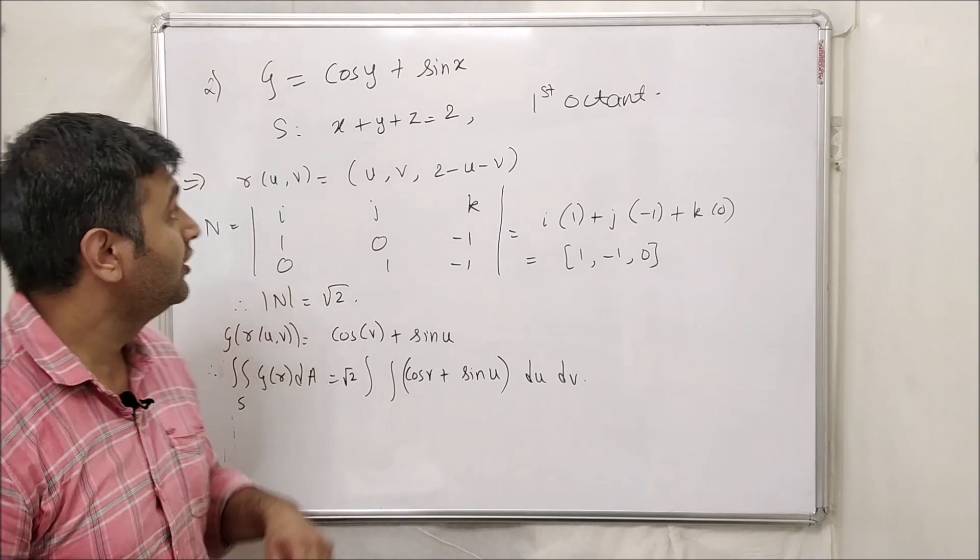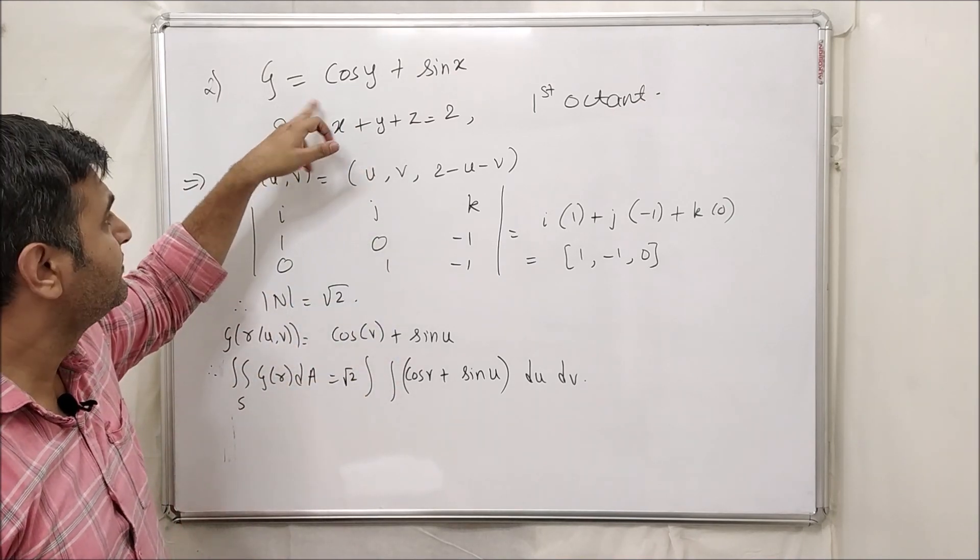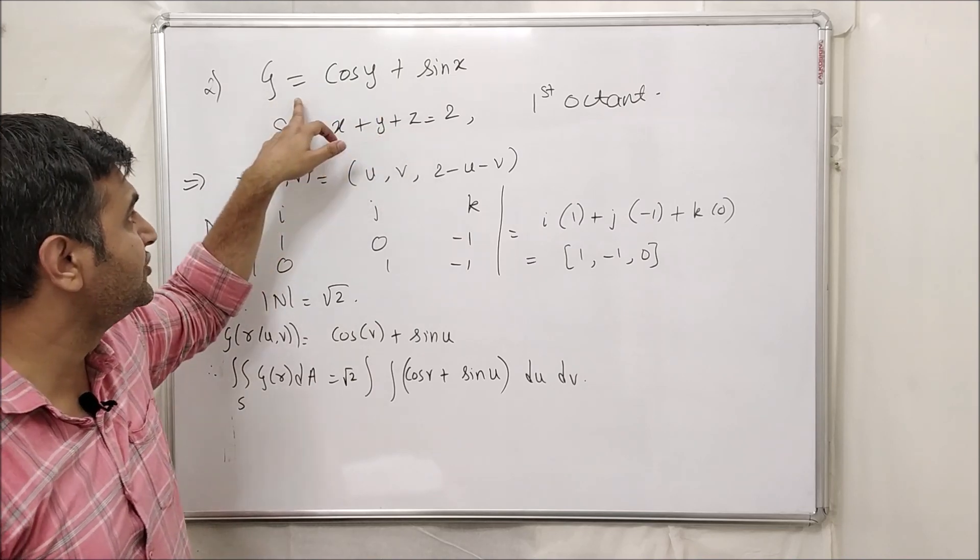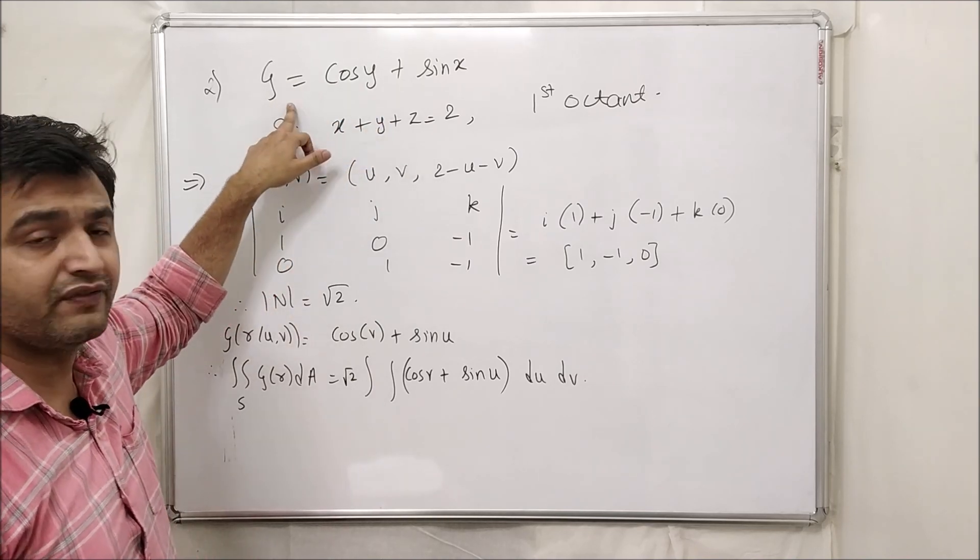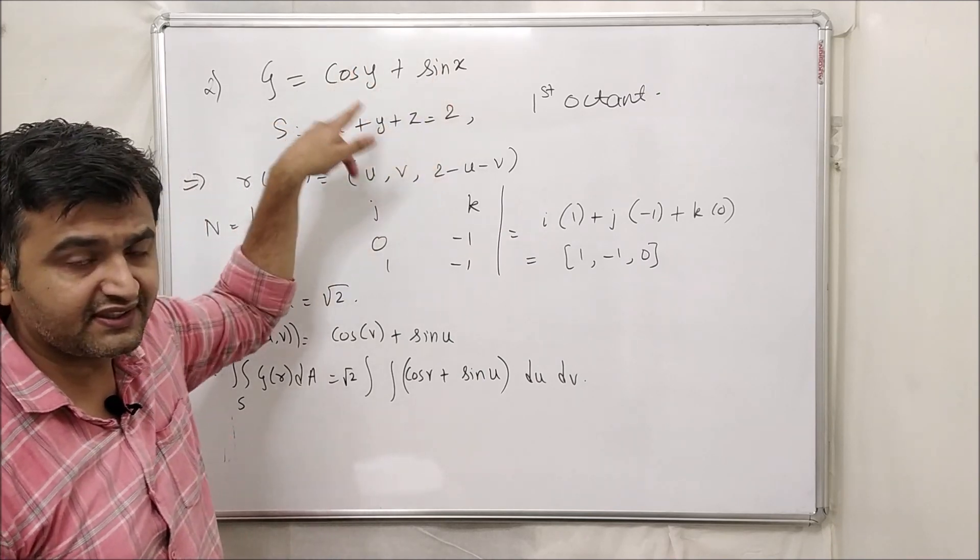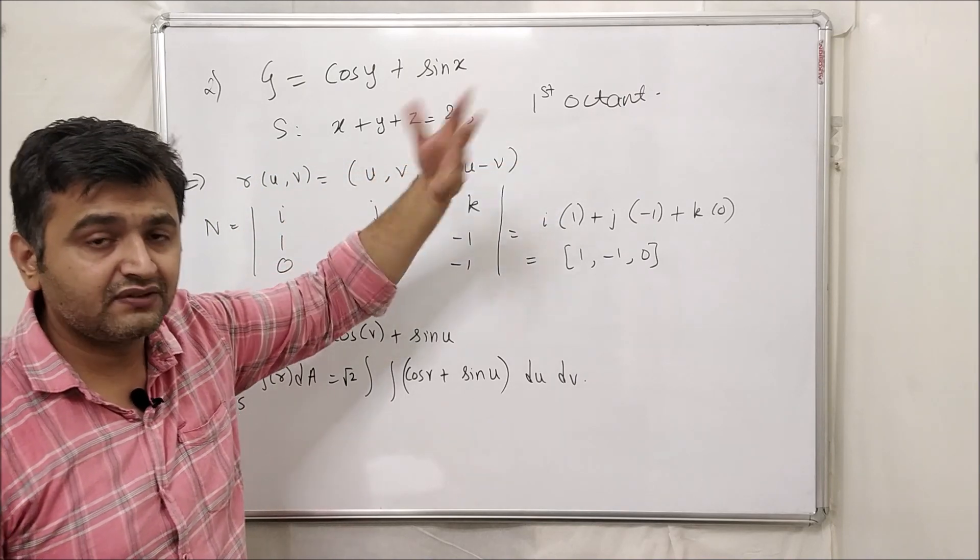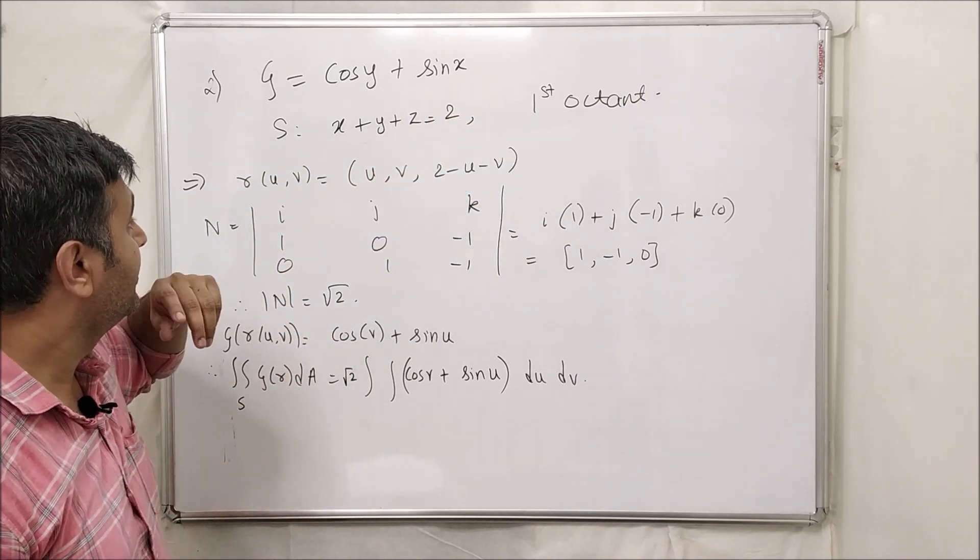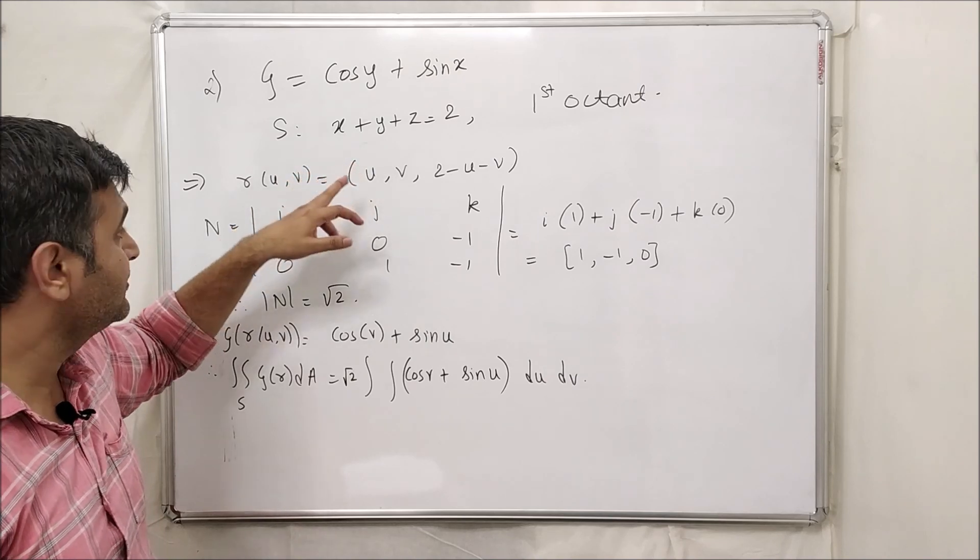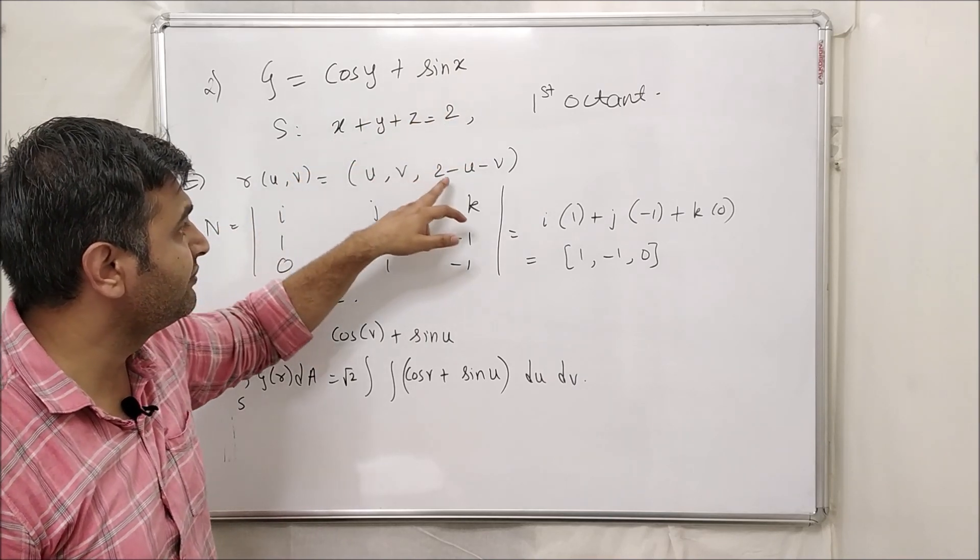Now let's go for the second example. So here is the second problem. So g is the scalar field given to you. g of xy, people usually ignore xy, so this is g of xy is equal to, or g of xyz actually, g of xyz equal to cos y plus sin x. So this is independent of z, and this is a plane in first octant. So xyz all are greater equal 0.